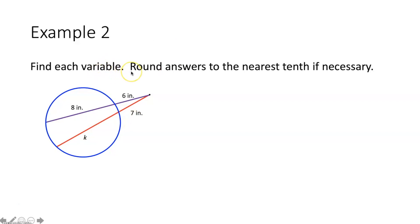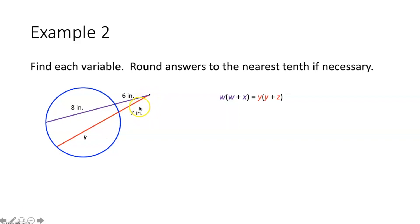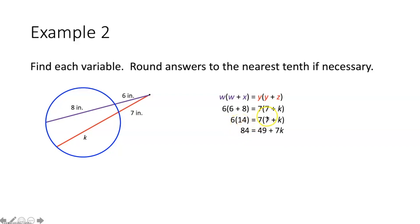Example two says find each variable, round answers to the nearest tenth if necessary. We have two secants that intersect at a point outside of the circle. Using the secant segments theorem, the length of one external secant segment times the entire secant — so 6 times the quantity 6 plus 8 — is going to equal the other external secant segment times its entire secant, so 7 times the quantity 7 plus k. Inside the parentheses: 6 plus 8 is 14, and 6 times 14 is 84. Distributing the 7, then subtracting 49 from both sides and dividing by 7, I get k is equal to 5 inches.